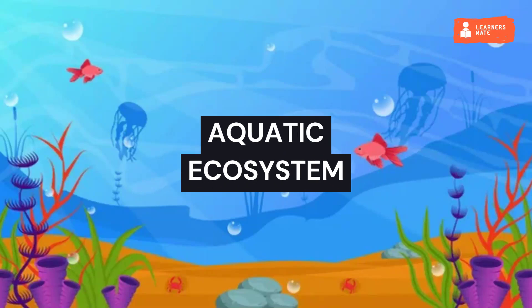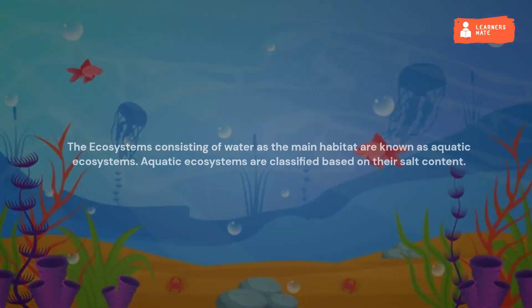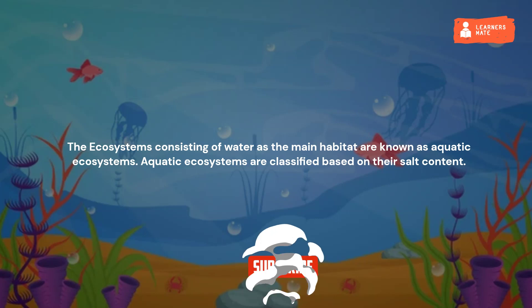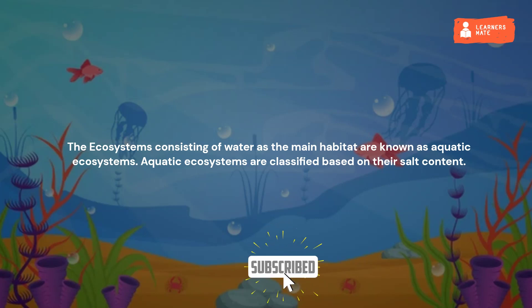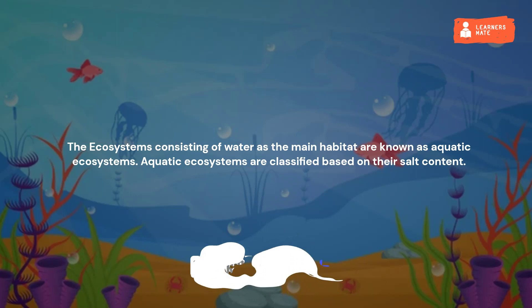The Aquatic Ecosystem. The ecosystems consisting of water as the main habitat are known as aquatic ecosystems. Aquatic ecosystems are classified based on their salt content.